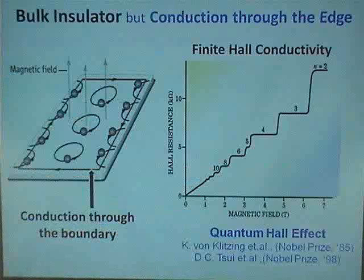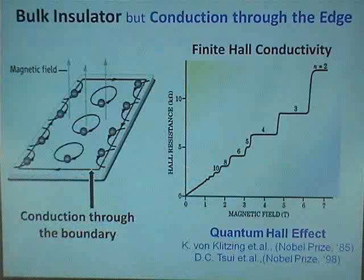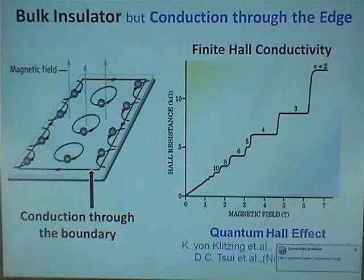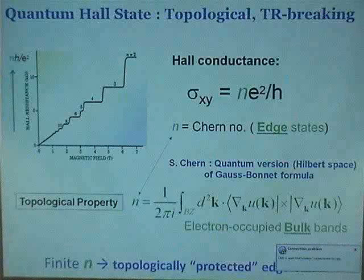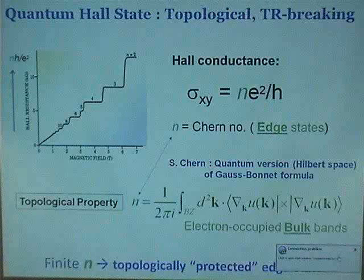As we all know, the quantum Hall effect phase is a band insulator, but it has topological properties in the sense that there can be conduction through the boundary, and quantum numbers can be read off from a transport measurement. The quantum number of the quantum Hall effect is a topological quantum number, and there is a close correspondence between bulk and edge through the Chern theorem. This finite Chern number n gives topological protection.